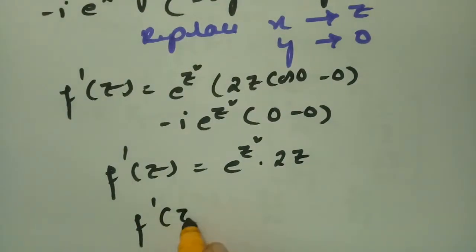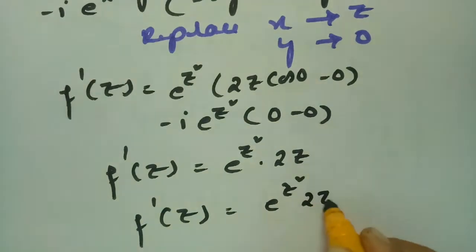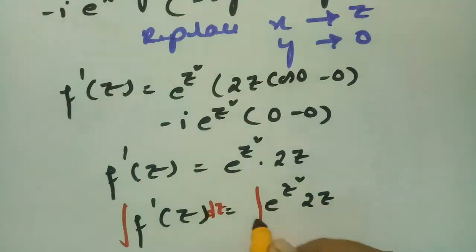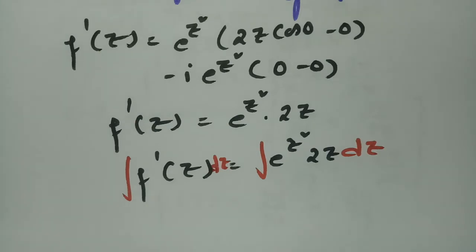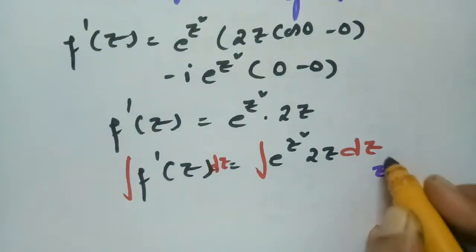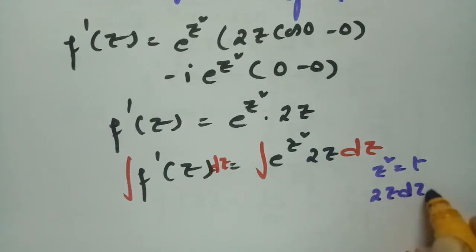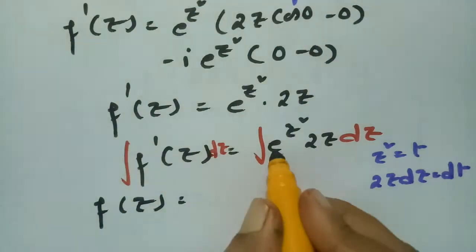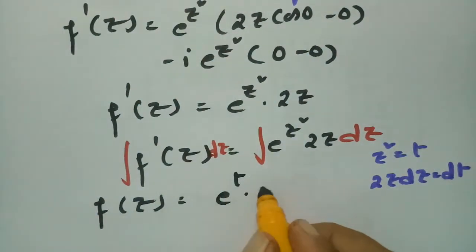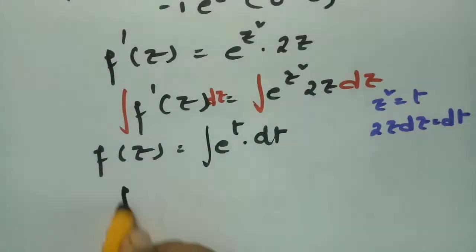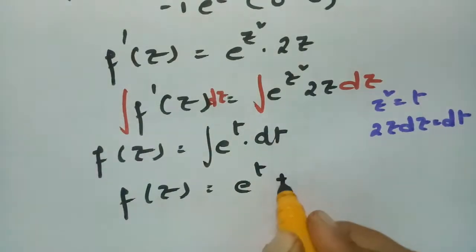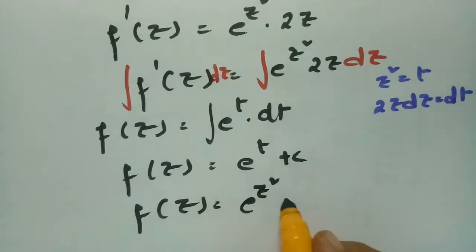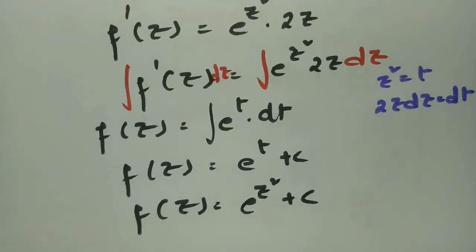So f'(z) = 2z · e^(z²). Integrating both sides with respect to z, let t = z², so dt = 2z dz. Then f(z) = ∫e^t dt = e^t + c = e^(z²) + c. This is our analytic function.